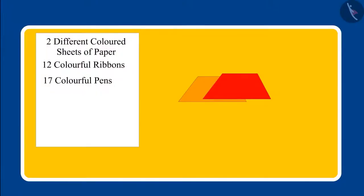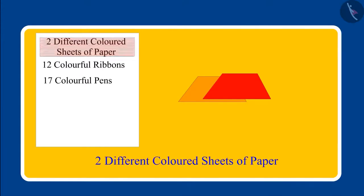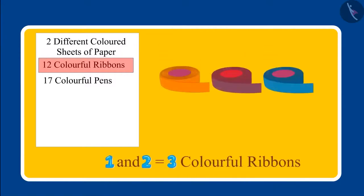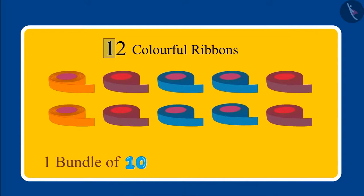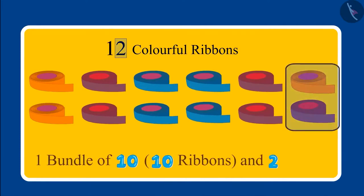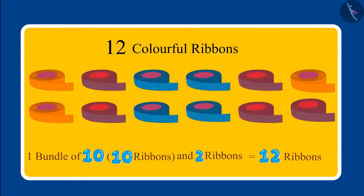First, two sheets of paper is written in the list, which you have brought correctly. Tell me what is written below that. One and two, which means three colorful ribbons? Oh no, Chotu — you added one and two. We don't read this number like that. Here, one means one bundle of ten, that means ten ribbons. And two means two more ribbons, so in total it becomes twelve ribbons.